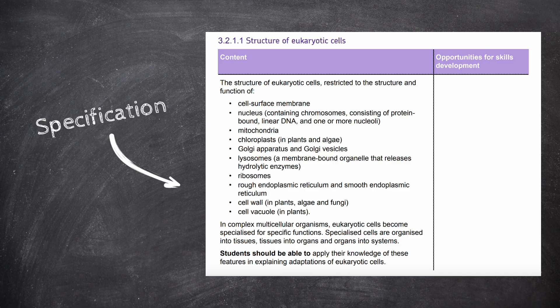We need to know about the structure and function of various components and organelles of eukaryotic cells, including the cell surface membrane, the nucleus, mitochondria, chloroplasts, the Golgi apparatus and Golgi vesicles, lysosomes, ribosomes, the rough and smooth endoplasmic reticulum, the cell wall, and the cell vacuole. Note that some of these organelles or components only exist in certain types of cells — a cell vacuole is only a feature of plant cells, for example. I will cover what components or organelles belong in what cells as we go along.